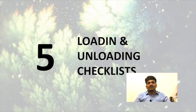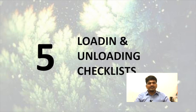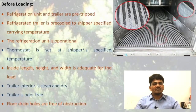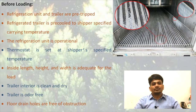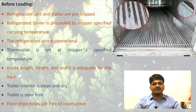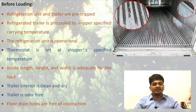Now we shall talk about the loading and unloading checklists — what kind of checklist we should follow before loading and during unloading. Before loading: ensure the refrigeration unit and trailer are pre-cooled to the specified carrying temperature; the refrigeration unit is operational; the thermostat is set at the specified temperature; inside lane height and width is adequate for the load; the trailer interior is cleaned and dried; the trailer is odor-free; and floor drain holes are free of obstructions.